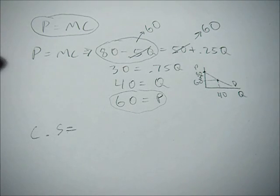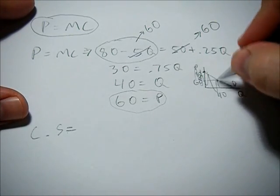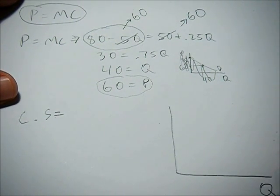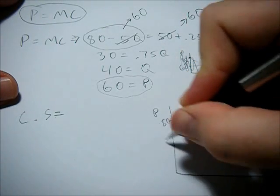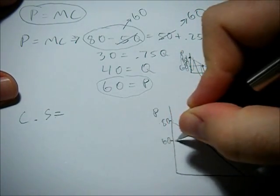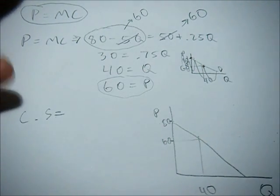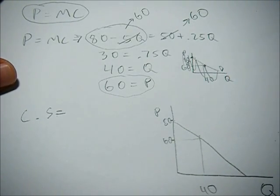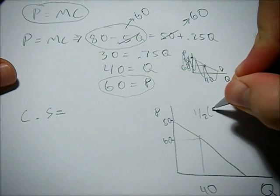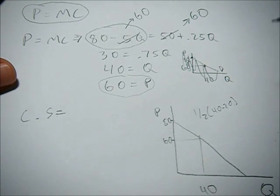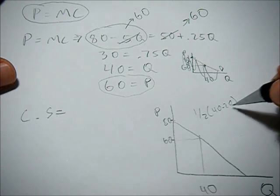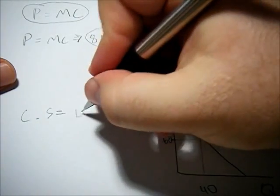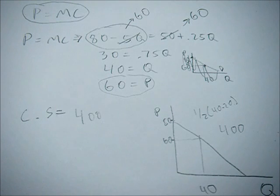So the base of our triangle, let me draw this a little bigger, we get 80, 60, and 40. So the base of our triangle is 40. The height is going to be 20, 80 minus 60. The area of a triangle is one-half base times height. So if we get 800 here times one-half, we get 400. So our consumer surplus in this problem is going to be 400.